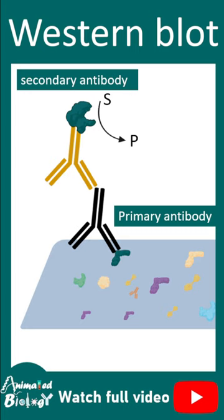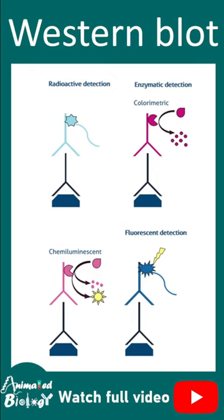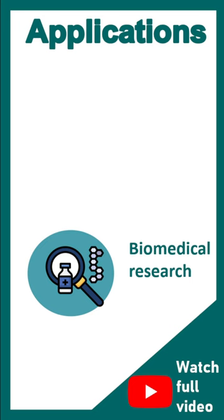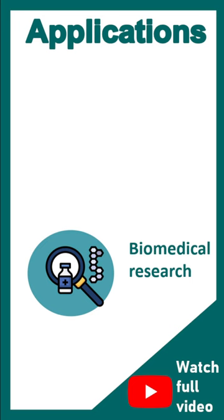There are different modes of development like enzymatic, chemiluminescent, and fluorescent. This is how a typical gel looks like, and there are a wide variety of applications of Western blotting.